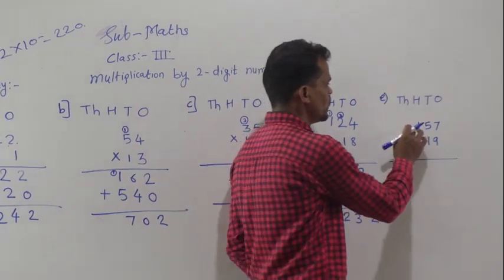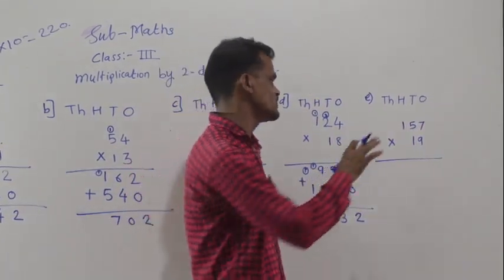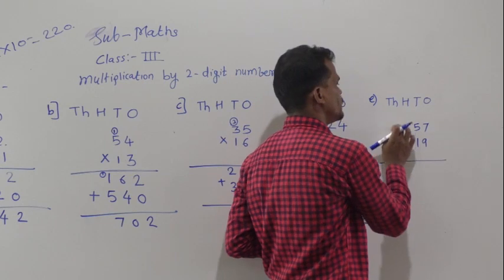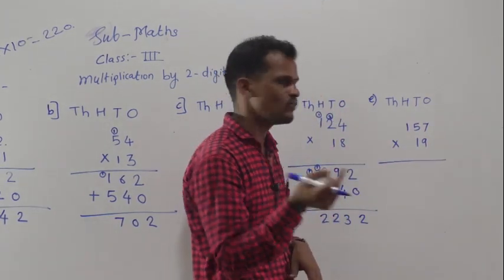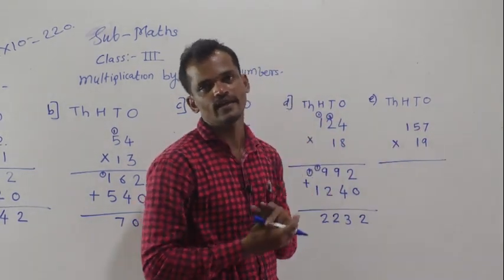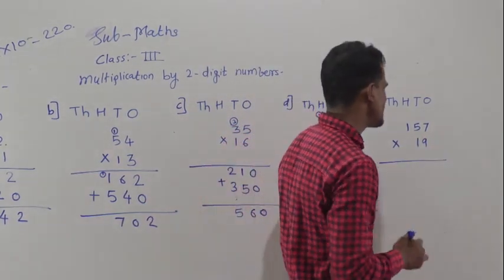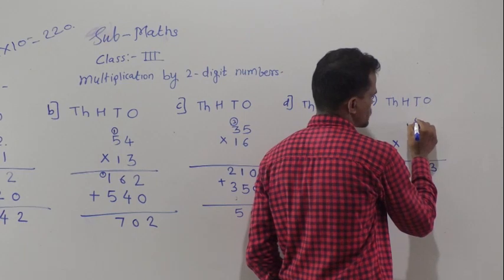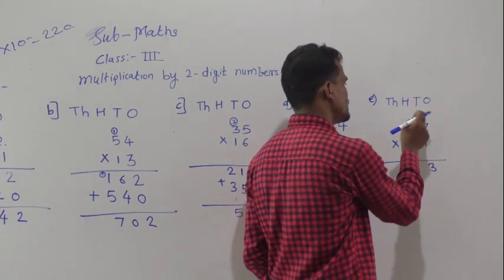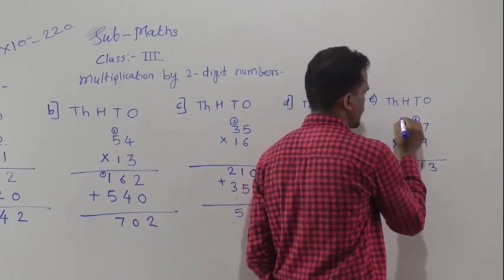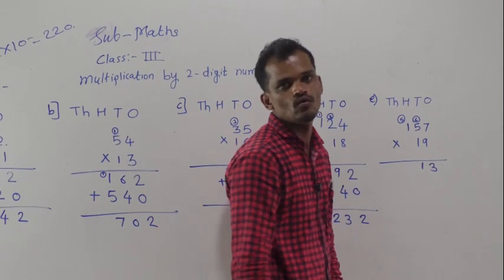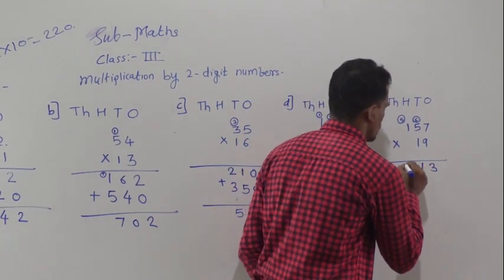Next example: 127 multiply by 19. We will solve this in 3 steps. First, multiply 127 by 9. Then multiply 127 by 1, and then add the 2 products. So, 9 sevens are 63 — write 3 here and carry 6 forward. 9 fives are 45, 45 plus 6 is 51 — write 1 here and carry 5. 9 ones are 9, plus 5 carry is 14 — write 14 here.